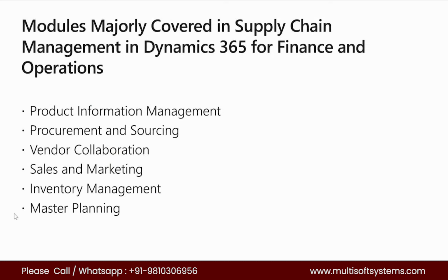I mentioned direct delivery — if there are insufficient items in the warehouse, we raise a sales order to the warehouse and a purchase order to the vendor, and the vendor delivers directly to the warehouse, from where we deliver to the customer. That comes under Master Planning. In Master Planning, if your benchmark is 100 items in the warehouse and the count drops to 80, the system automatically raises a purchase order to the vendor for 20 items to restore the benchmark of 100. This automatic process is called Master Planning.